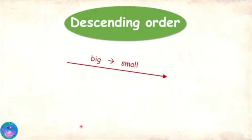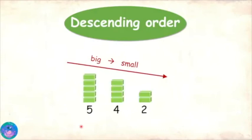Like you can see in this example, 5 is the biggest so that comes first, then 4, and last 2. Descending order is just the opposite of ascending, right? Yes, Sam, that is correct.